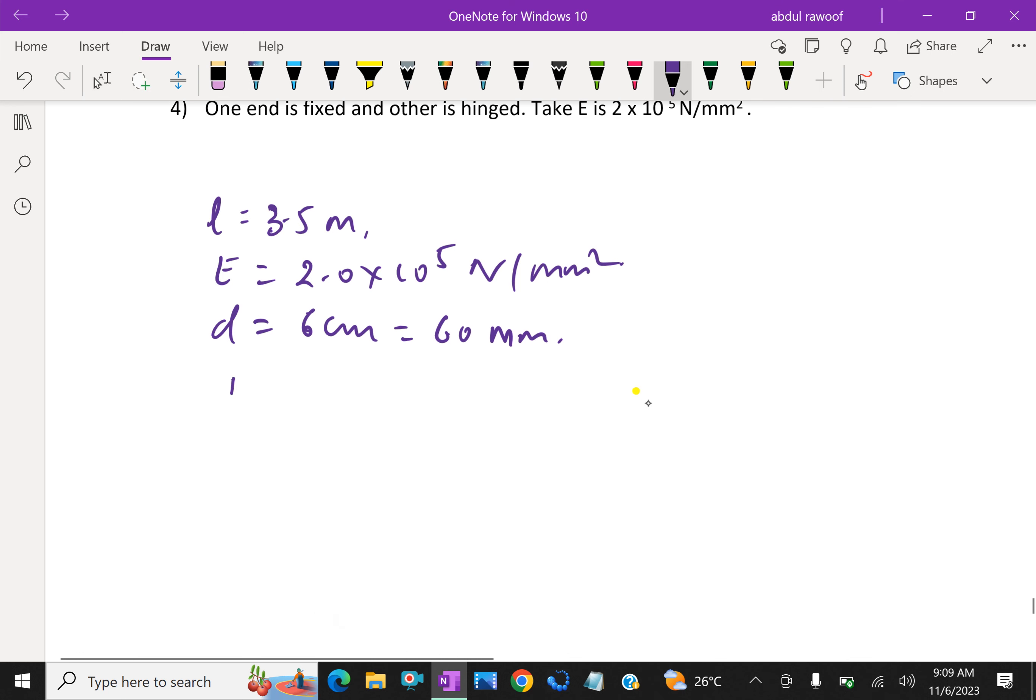Now, I equal pi by 64 into 60 power 4, which is equal to 635850 mm power 4.